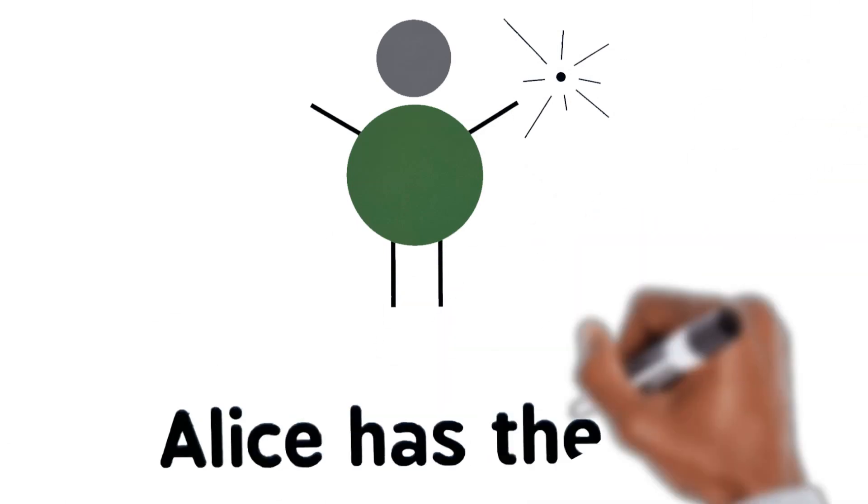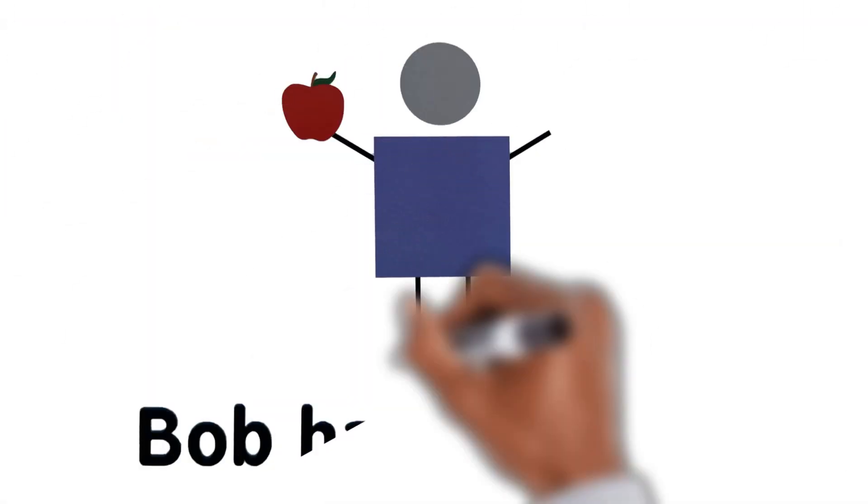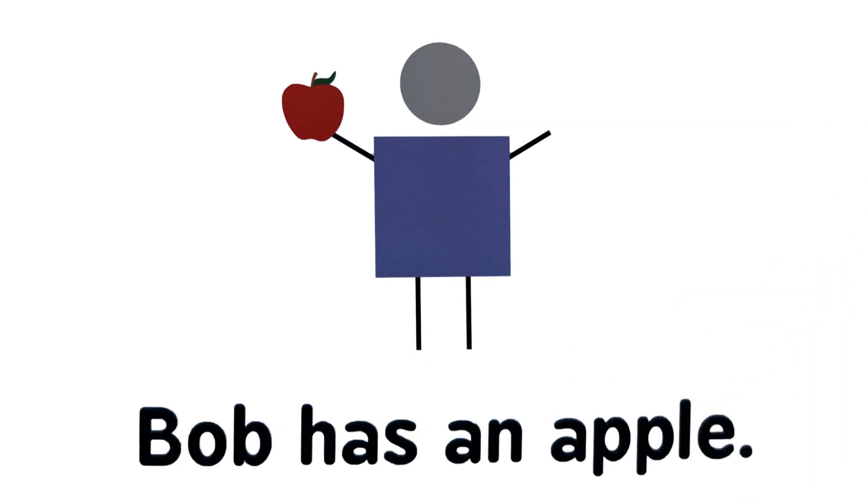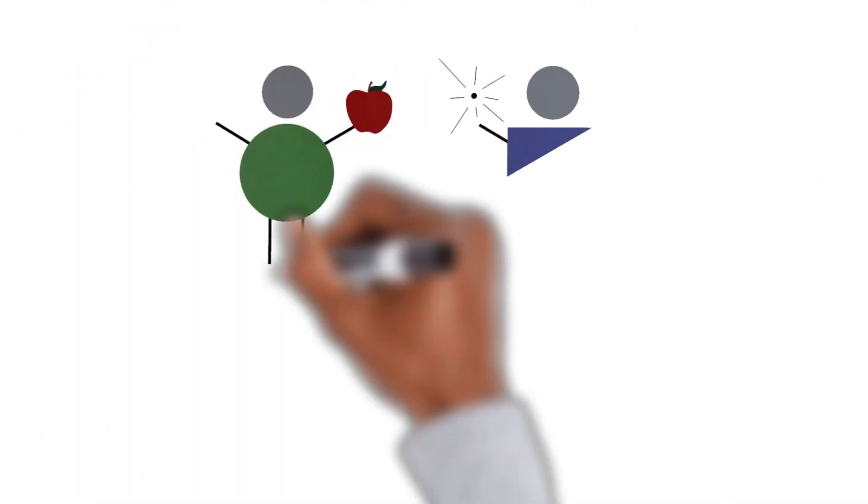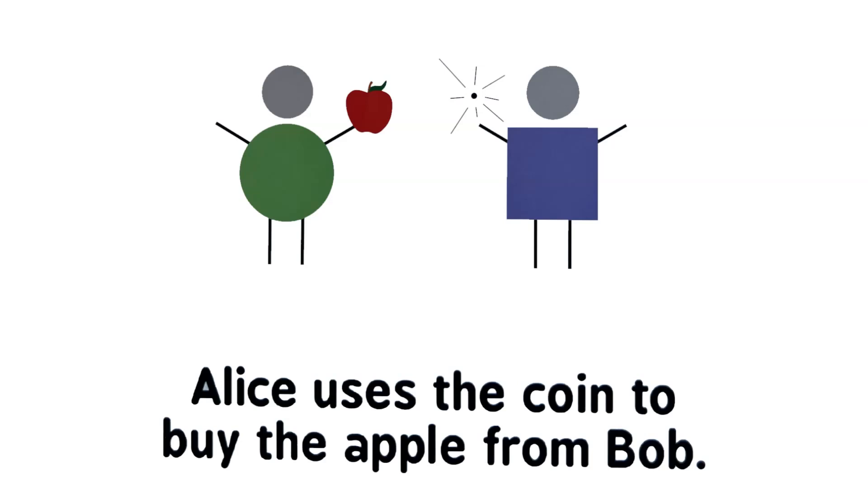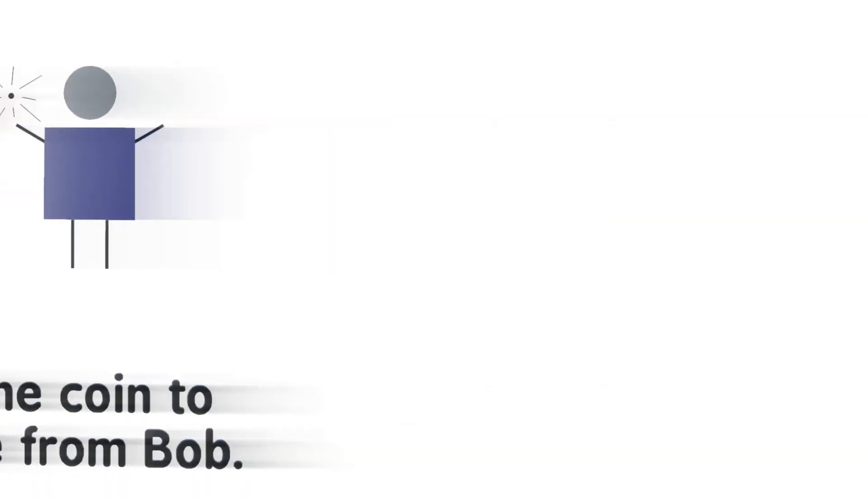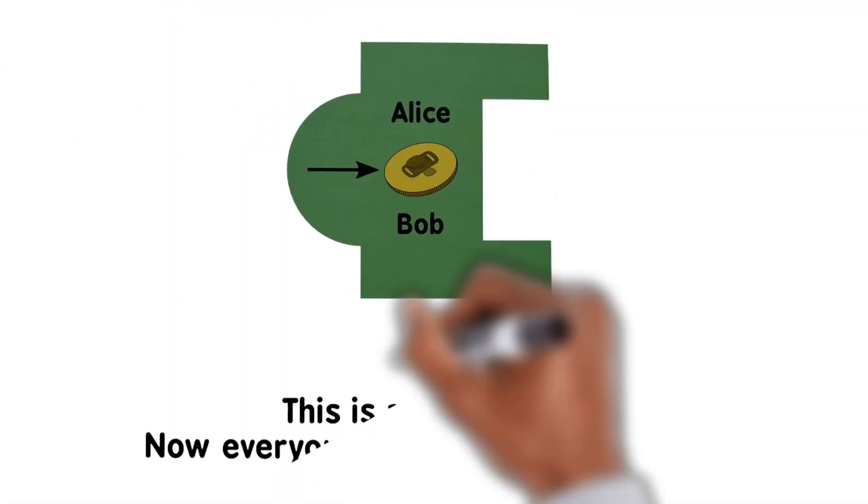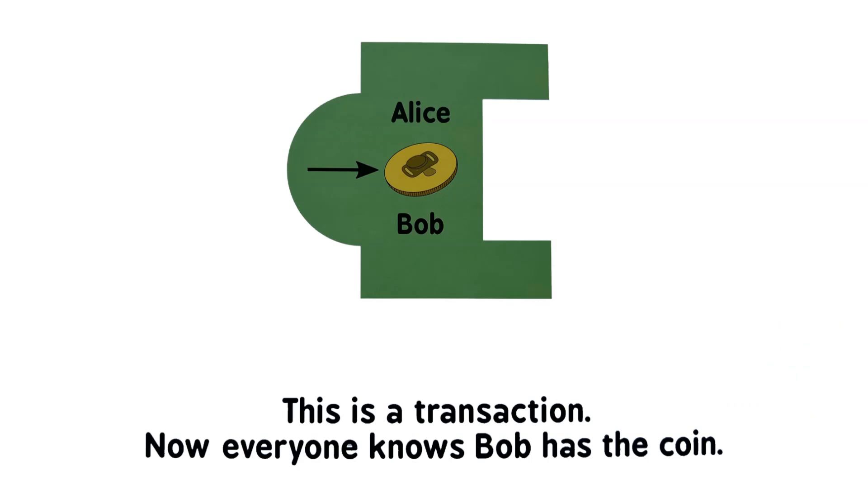Alice has the coin. Bob has an apple. Alice uses the coin to buy the ball from Bob. This is a transaction. Now everyone knows Bob has the coin.